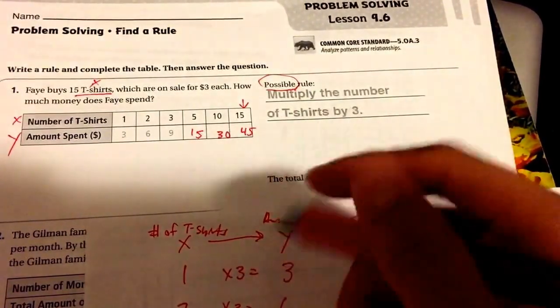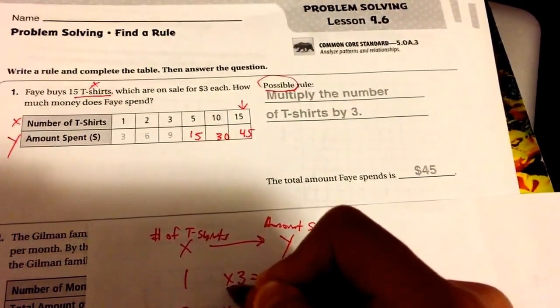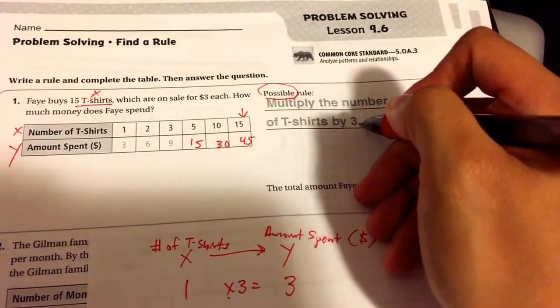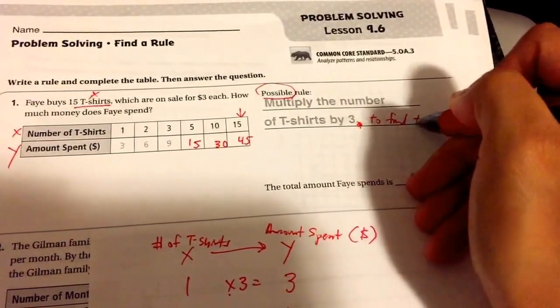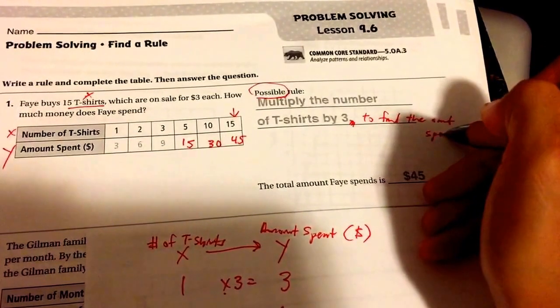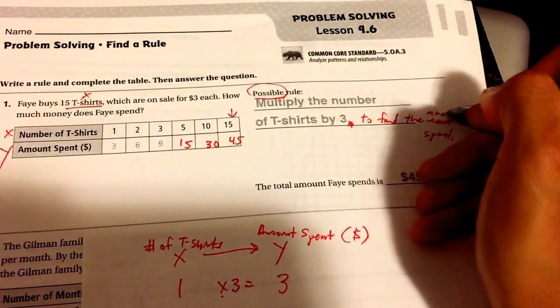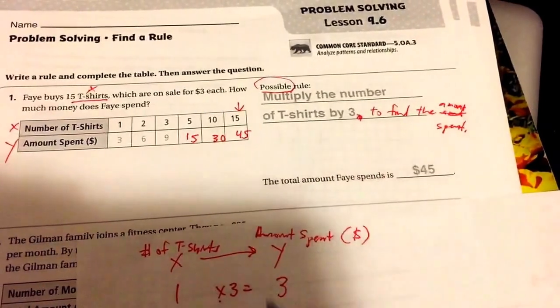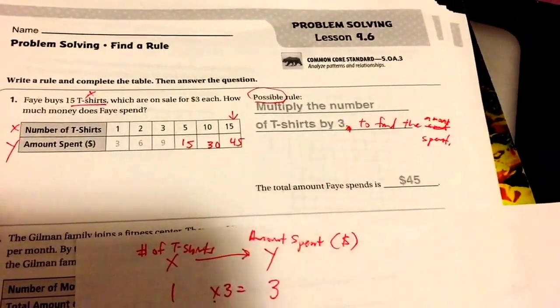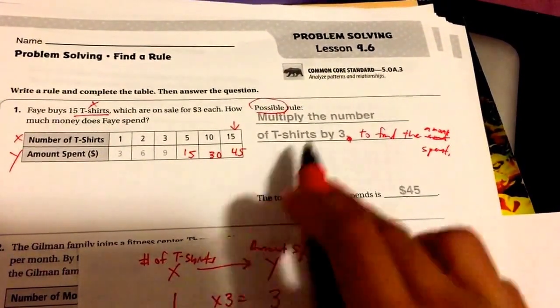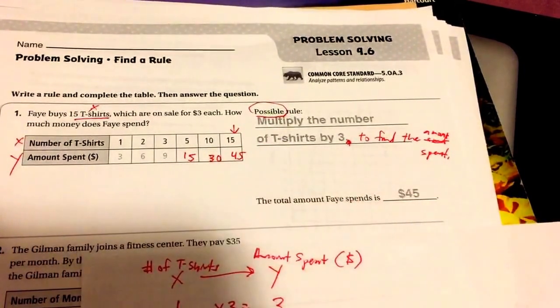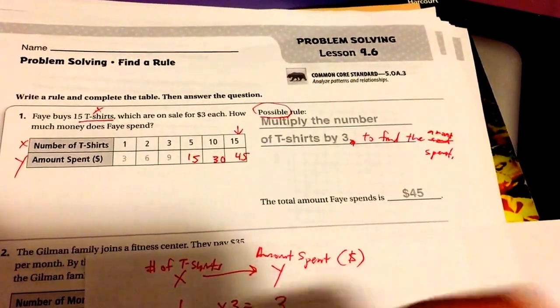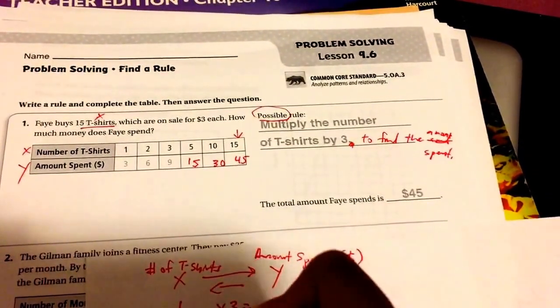And so what I don't like about theirs is they don't finish the rule. Here you could see that there's a multiplication sign—multiply—and here's our X, the number of t-shirts, by three. And what I'd want you to add is why would you do that? To find the amount spent. I know that's a little messy—that should say amount, A-M-O-U-N-T. So you're going from here to here. Here's your X, your t-shirts. Multiply the number of t-shirts by three to find the amount spent.